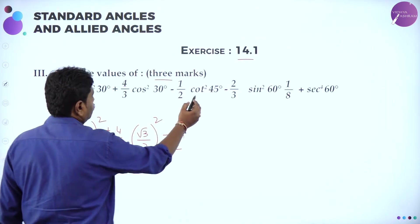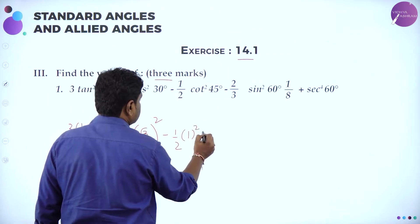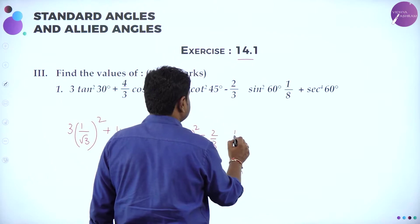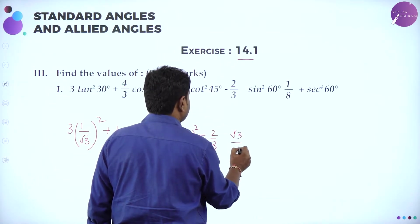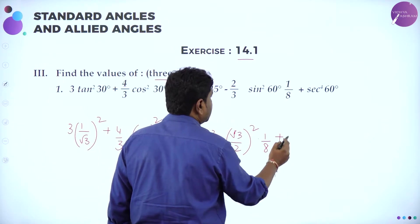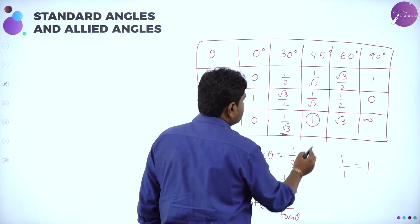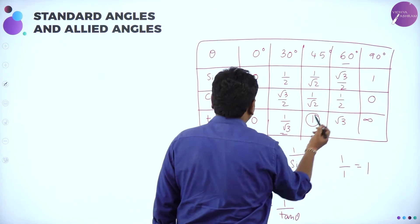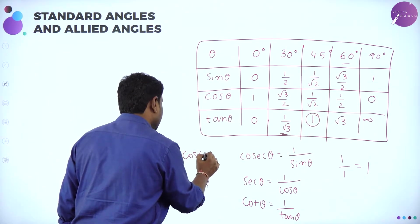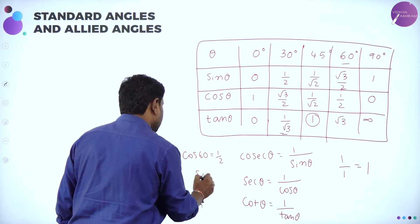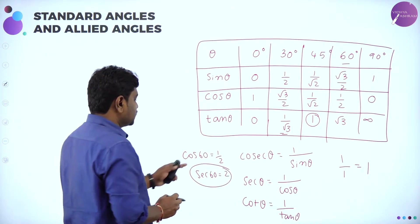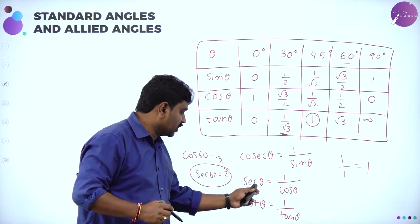So cot² 45 = 1² = 1. Minus (2/3) × sin² 60: sin 60 = √3/2, so (√3/2)² whole square. Into (1/8) plus sec⁴ 60. Secant 60 is the reciprocal of cos 60. cos 60 = 1/2, so secant 60 = 2.